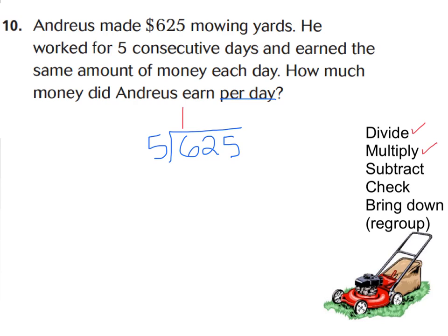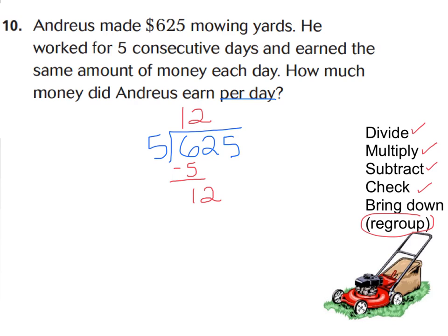Multiply: 1 times 5 is 5 — we used up 5 of our hundreds. Subtract: 1 group of 100 left. Check: is 1 less than 5? Yes. Bring down our tens place — my 2 groups of 10. We're regrouping: 10 tens from the remaining 100 plus 2 tens is 12 tens. If I have 12 strips of 10 and divide into 5 groups, each group gets 2 apiece. Multiply: 2 times 5 is 10 — we used up 10 of our strips. Subtract: 2 groups of 10 left. Check: is 2 less than 5? Yes.